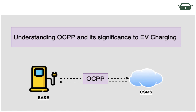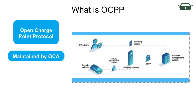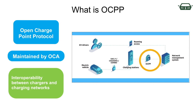Hi everyone. This video talks about what is OCPP and what is the significance of this protocol in EV charging infrastructure. OCPP stands for Open Charge Point Protocol. It is maintained by Open Charge Alliance, based out of Netherlands. It is a communication protocol that facilitates exchange of information between an EV charger and its backend management system. OCPP is an internationally adopted open-source standard, meaning there is no licensing barrier involved in adopting it.